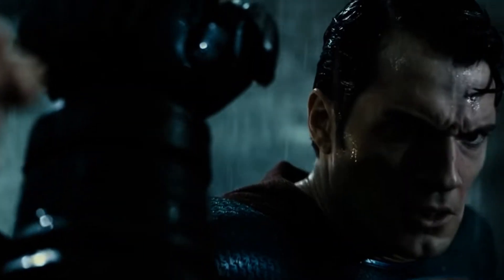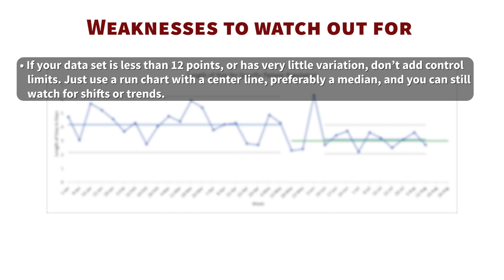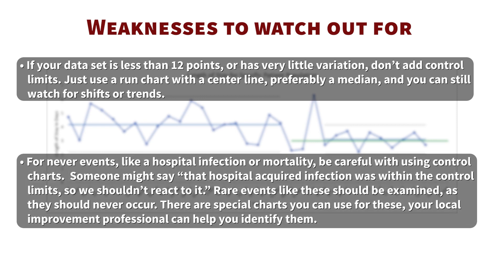As with any superpower, SPC does have some weaknesses to watch out for. If your data set is less than 12 points or has very little variation, don't add control limits — just use a run chart with a center line, preferably a median, and you can still watch for shifts or trends. For never events like a hospital infection or mortality, be careful with using control charts. Someone might say that a hospital-acquired infection was within the control limits so we shouldn't react to it. Rare events like these should always be examined.